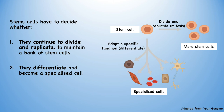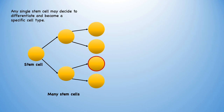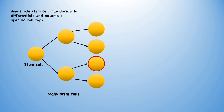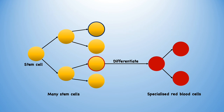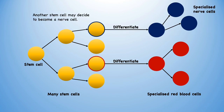Any single stem cell can decide to differentiate and become a specific cell type. For example, it may choose to become a red blood cell, and once specialised, this blood cell can grow and divide to make many more red blood cells. Another stem cell may decide to become a nerve cell. Here you can see how a single stem cell divides to make multiple stem cells and differentiates to become multiple cell types, helping to maintain the correct number of all types of cells in our body.